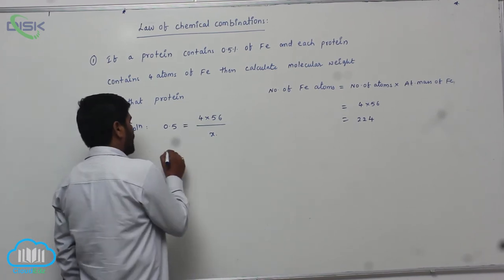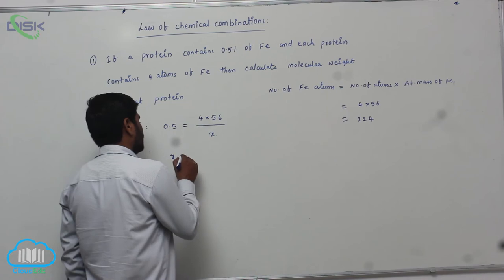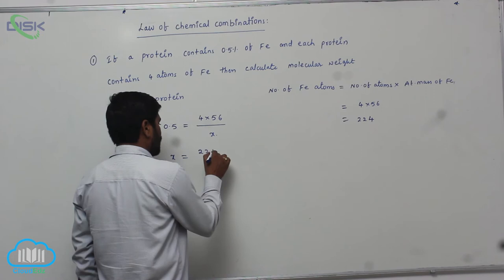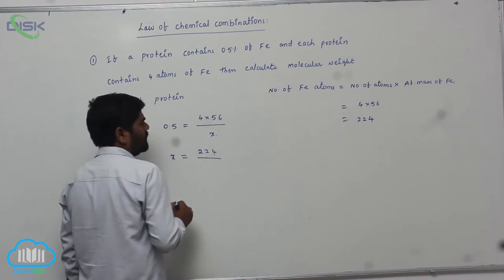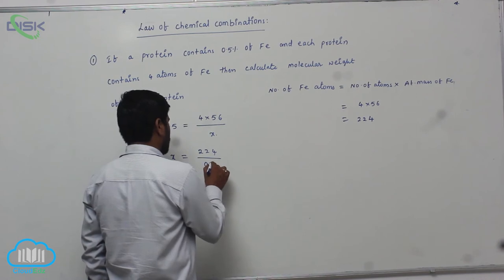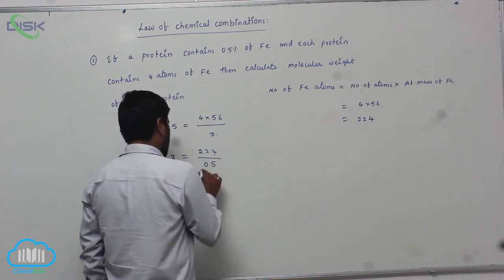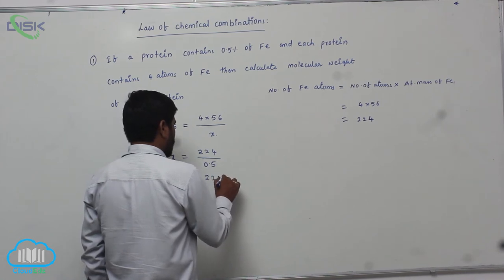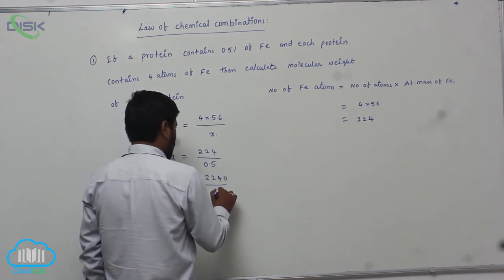So therefore x equals to 224 divided by 0.5. Now it becomes 2240 divided by 5.